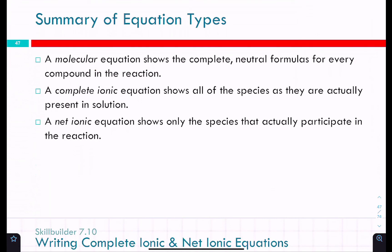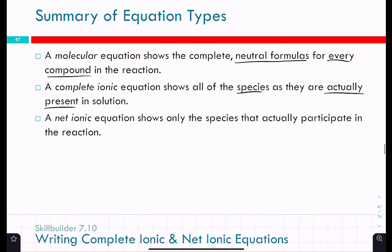Summarizing the three types of equations: the molecular equation shows everything in neutral form. The complete ionic equation shows all species as they actually are present in solution — so NaCl becomes Na⁺ and Cl⁻. The net ionic equation shows only the species that actually participate in the reaction; anything that stays floating in solution as spectator ions gets dropped, giving a much more concise equation.